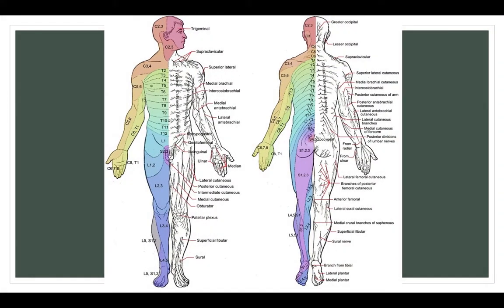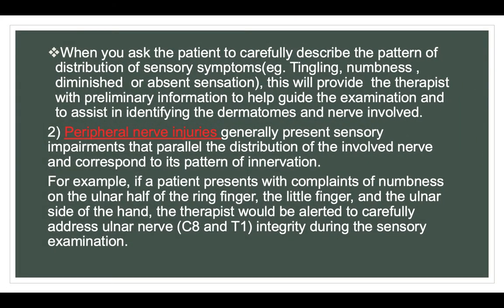This picture shows the dermatomes from cervical to coccygeal nerves, seen in both anterior and posterior views. When you ask the patient to carefully describe the pattern of distribution of sensory symptoms — e.g., tingling, numbness, diminished or absent sensation — this provides the therapist with preliminary information to help guide the examination and to assist in identifying the dermatomes and the nerves involved.